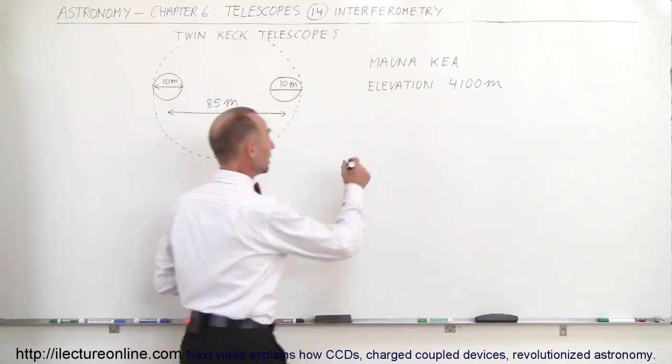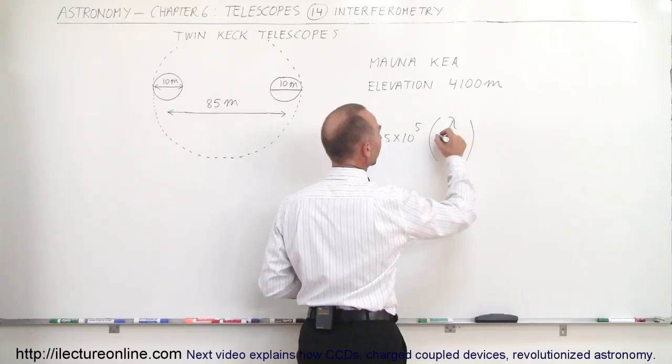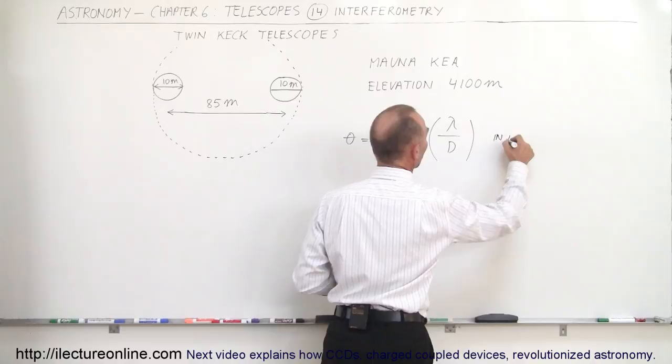The angle of resolution theta is equal to 2.5 times 10 to the fifth times the ratio of the wavelength of the light that we look at divided by the diameter of the telescope. That would then be in arc seconds when we use this equation.